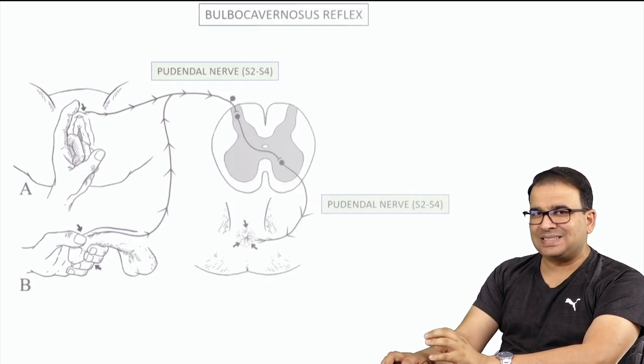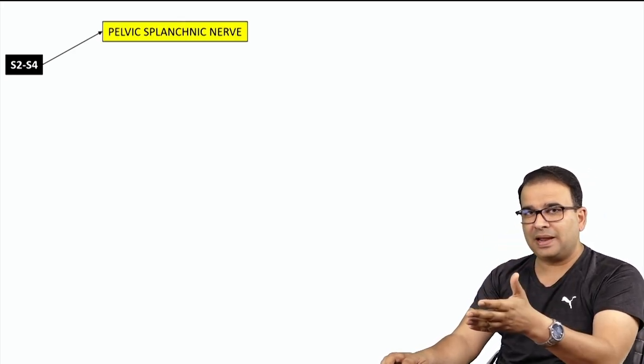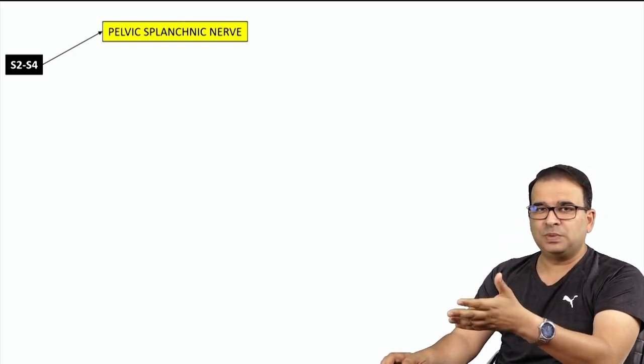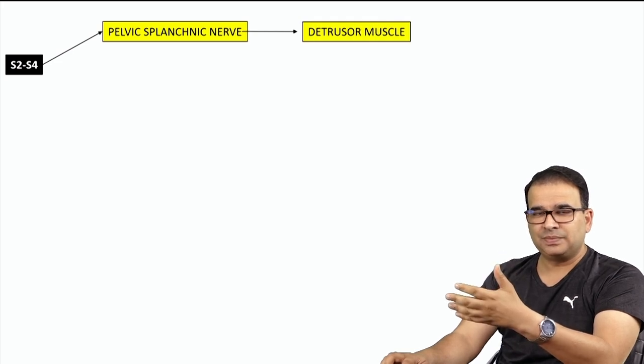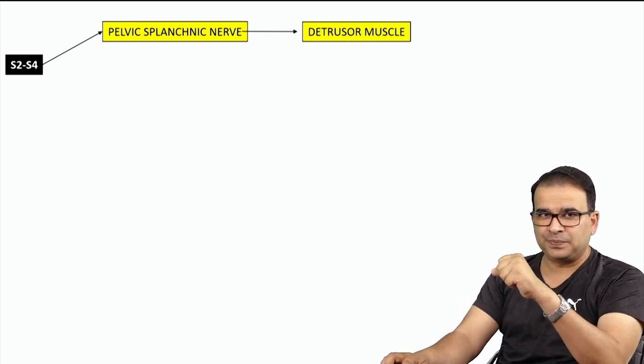Talking more about the S2, S3, and S4 segments: in conus medullaris syndrome, these sacral segments are precisely involved, giving rise to both somatic and splanchnic nerves. The pelvic splanchnic nerves from S2, S3, S4 supply the smooth muscles of the bladder — the detrusor muscle — which is responsible for emptying the bladder.